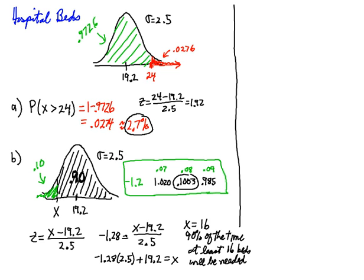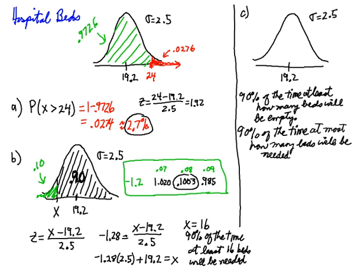Now, question C: 90% of the time, at least how many beds will be empty? We use the same distribution — the only one we have — and remember the random variable is the number of beds needed. The question is a little different. '90% of the time, at least how many beds will be empty' translates into '90% of the time, at most how many beds will be needed.'